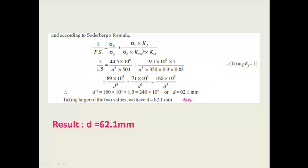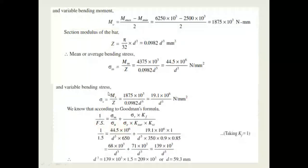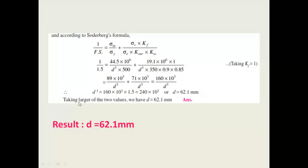According to the Soderberg formula: 1 / FOS = (sigma_m / sigma_y) + (sigma_v × K_f) / (sigma_e × K_surface × K_size). Substituting all values gives d = 62.1 mm. Since we have two values, we select the larger diameter. Therefore, d = 62.1 mm, obtained from the Soderberg equation, is the final result.